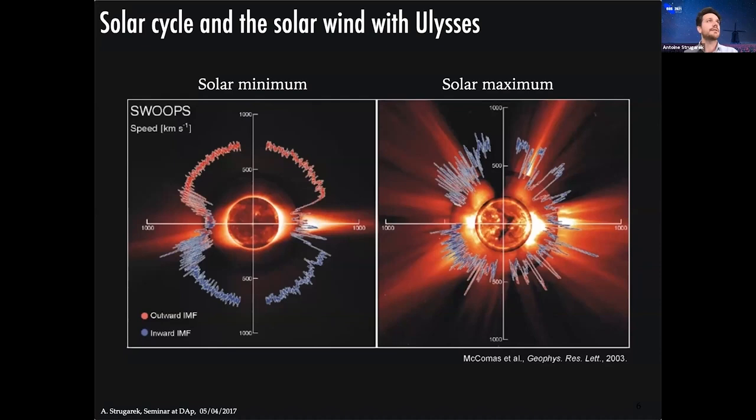This cyclic activity has a strong influence on how the heliosphere is structured, as shown with Ulysses data. During solar minimum you have very fast wind at high helio-latitude, typically 600 to 700 kilometers per second, and close to the equatorial plane a mixture of fast and slow winds. During solar maximum the magnetic topology of the Sun is more complex and you see a mixture of these different wind types at all helio-latitudes.